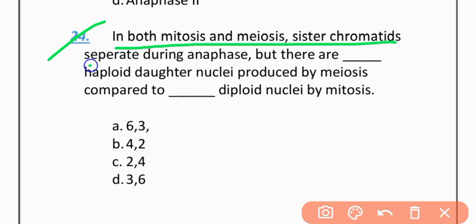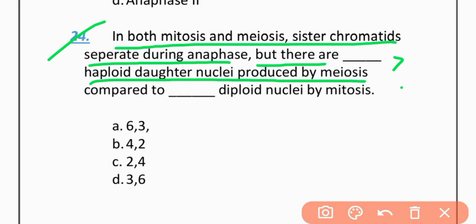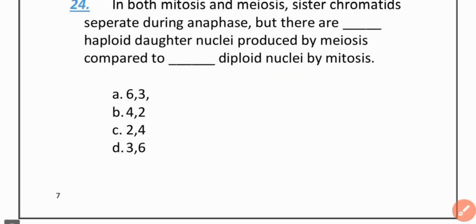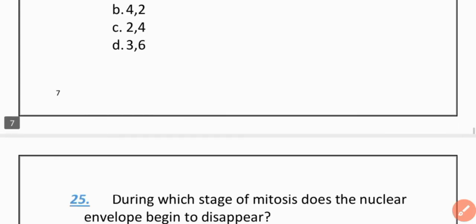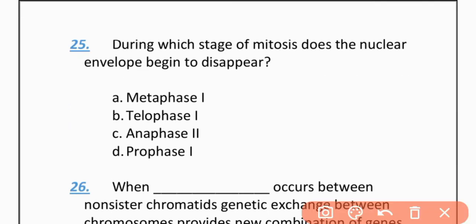MCQ 24: In both mitosis and meiosis, sister chromatids separate during anaphase. But there are haploid nuclei produced by meiosis compared to diploid nuclei of mitosis. The correct option is B — four and two.